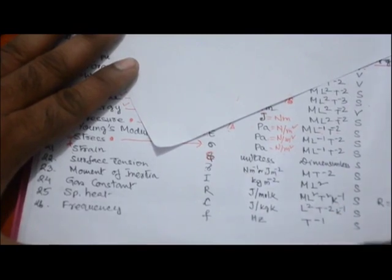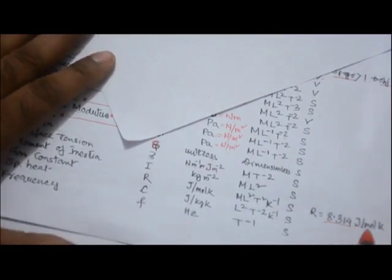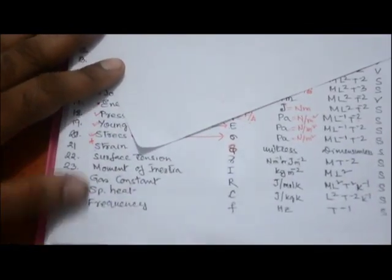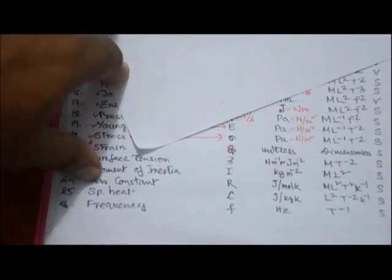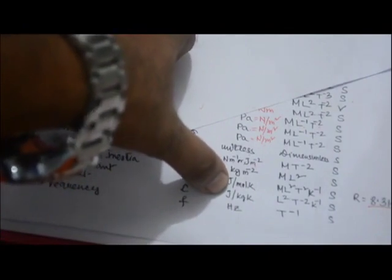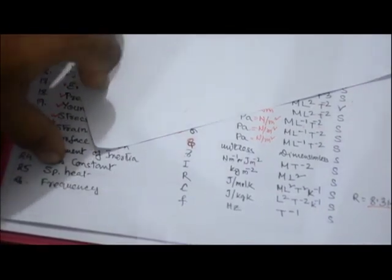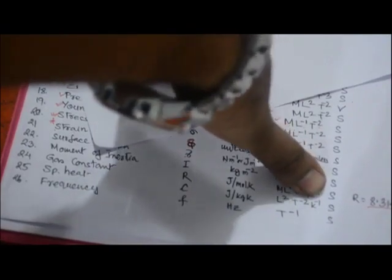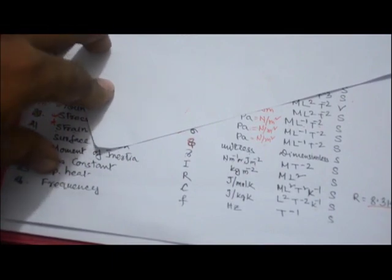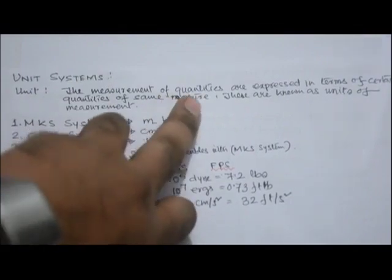The value of the gas constant R is 8.314 joule per mole per kelvin. Specific heat c has unit joule per kg per kelvin and dimension L²T⁻²K⁻¹. Frequency has unit hertz, dimension T⁻¹, and is a scalar quantity.